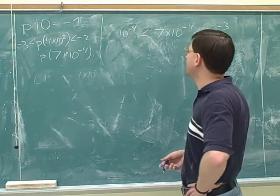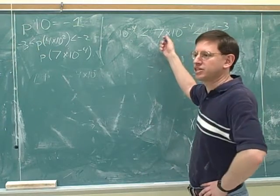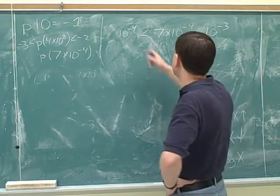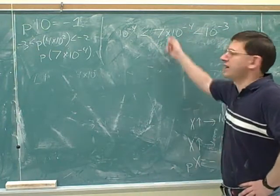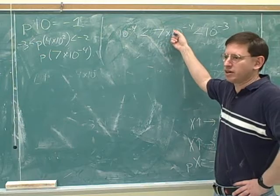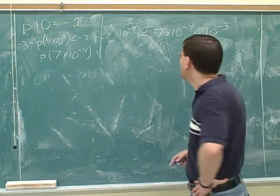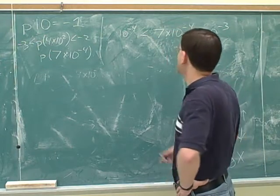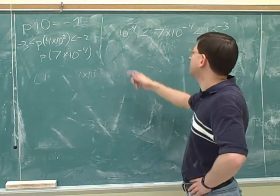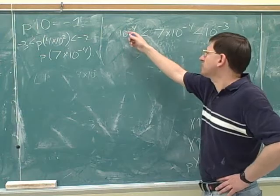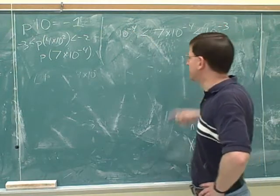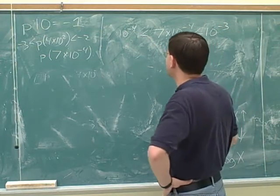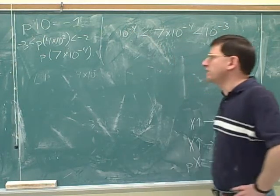And I think you used the exact right notation there. You started without writing down the p — we started with just the numbers without the p. And we don't compare this to 10 to the negative 5. This is between 10 to the negative 4 and 10 to the negative 3.